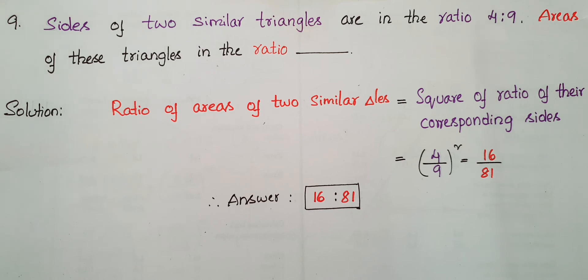This is 9th problem. Sides of two similar triangles are in the ratio 4 is to 9. Areas of these triangles in the ratio is what?